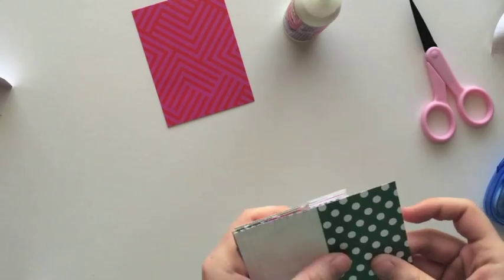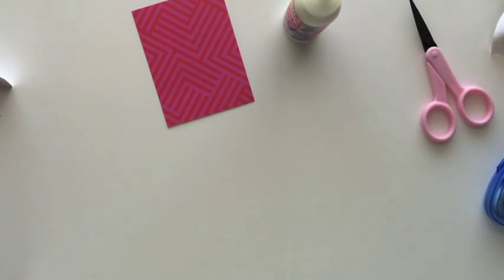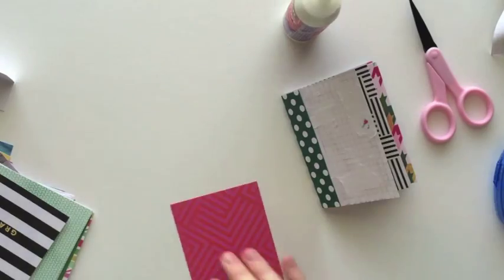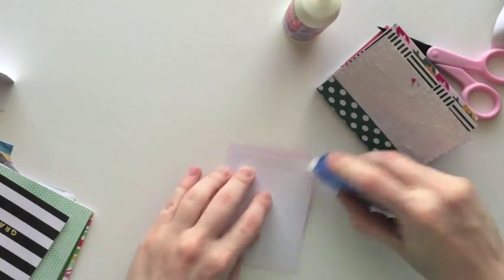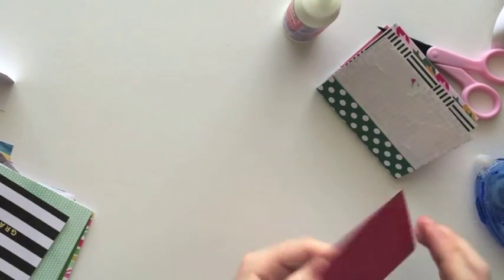So for the binding, you're just going to take that piece of paper that you put glue on and just fold it over the binding area. It stays really well, and just as long as you put enough glue on it you'll be good.